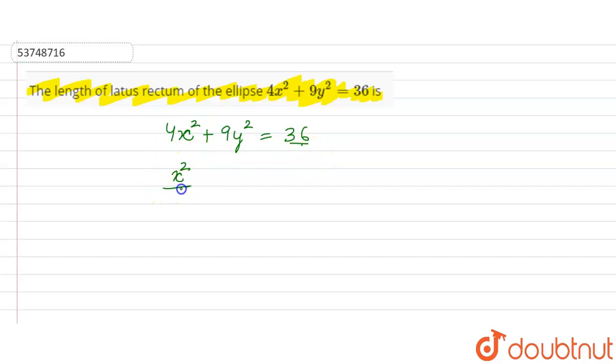So, what do we do? x² by 9, y² by 4 is equal to 1.